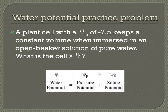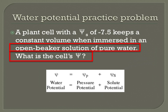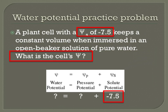We'll take a look at one final practice problem incorporating everything from the previous slides. The problem states: a plant cell with a solute potential of negative 7.5 keeps a constant volume when immersed in an open beaker solution of pure water. What is the solution's water potential? Two important pieces of information are that the beaker is open and it contains pure water. Since the beaker is open, the pressure potential is zero. Since this is pure water, the solute potential is zero. Therefore, the water potential outside the cell is zero. The only value given for the cell is the solute potential, listed as negative 7.5.